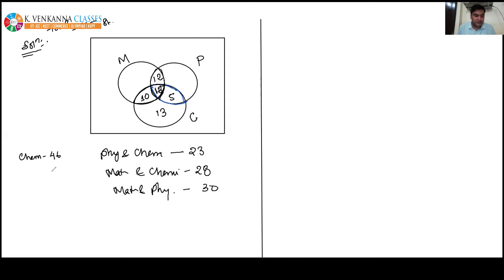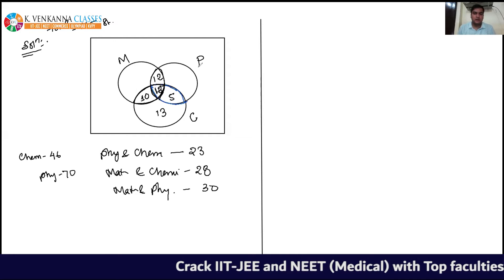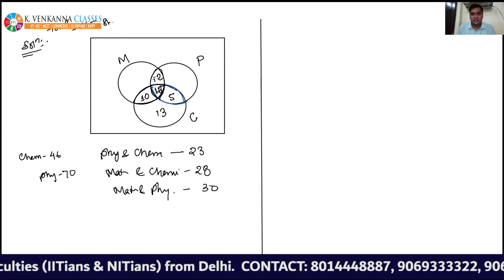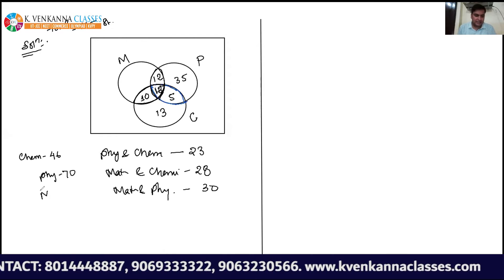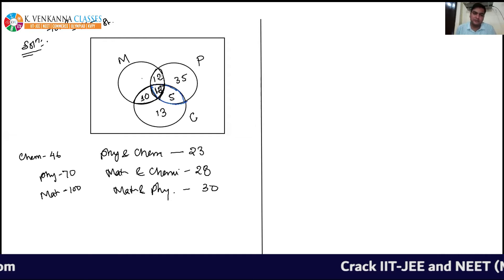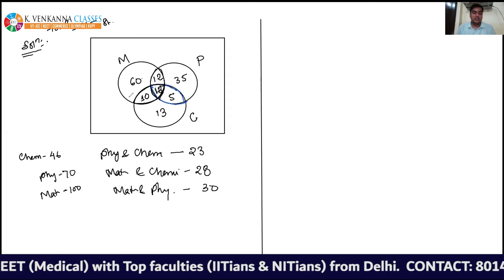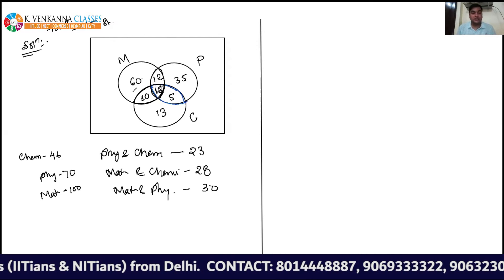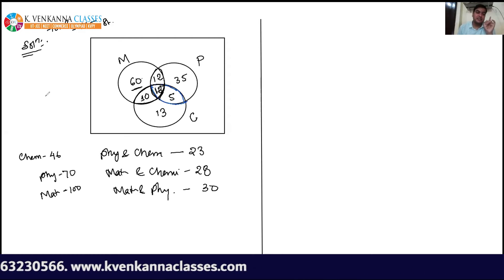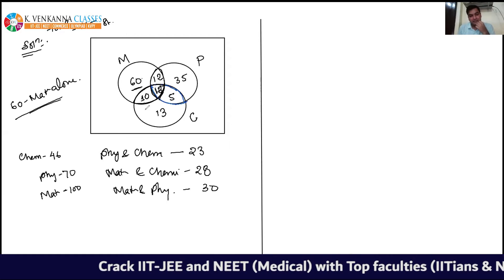Physics total was 70. Physics: 18 + 12 = 30, plus 5 = 35, so 35 goes into the Physics-only region. In Math the total was 100. Adding all: 18 + 12 = 30, plus 10 = 40, plus 10 = 50, leaving 16 for the Math-only... wait, correction: Math alone becomes 60. The first question was how many students were studying Math alone — the answer is 60 students study Math alone.